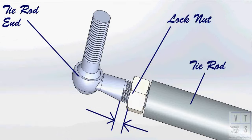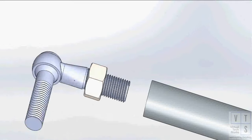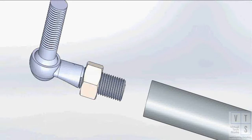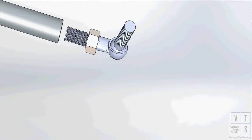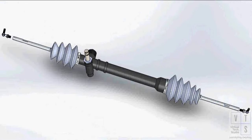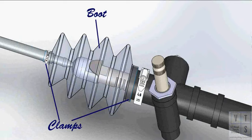Count the number of threads or mark and measure tie rod end lock nuts. Then loosen the lock nuts and remove tie rod ends. Next, remove the boot clamps and then remove the boots.